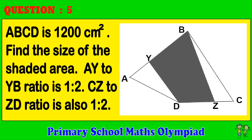Question 5. ABCD is 1200 cm². Find the size of the shaded area. The AY to YB ratio is 1 to 2. The CZ to ZD ratio is also 1 to 2.